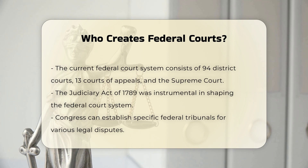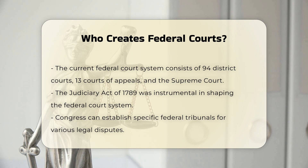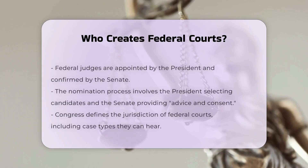The 94 District Courts, 13 Courts of Appeals, and the Supreme Court — establishment of specific courts. Congress has periodically exercised its power to create different federal tribunals to adjudicate various legal disputes. For example, the Judiciary Act of 1789 and subsequent legislation have shaped the current federal court system, including the establishment of judicial districts and the three-tiered structure of the judicial branch.